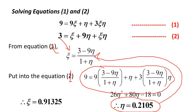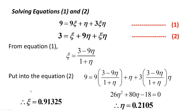So the natural coordinates of point Q, whose Cartesian coordinates are (7, 4), are ξ = 0.91325 and η = 0.2105. This demonstrates that if the Cartesian coordinates of any point are given, you can determine its natural coordinates.